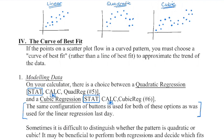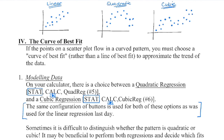We know data that is a linear graph is going to form a straight line. Data that forms the shape of a parabola is going to be a quadratic — it has one turning point. And data that forms the shape of a cubic function is going to have either two turning points or no turning points — just a little bend in the middle.